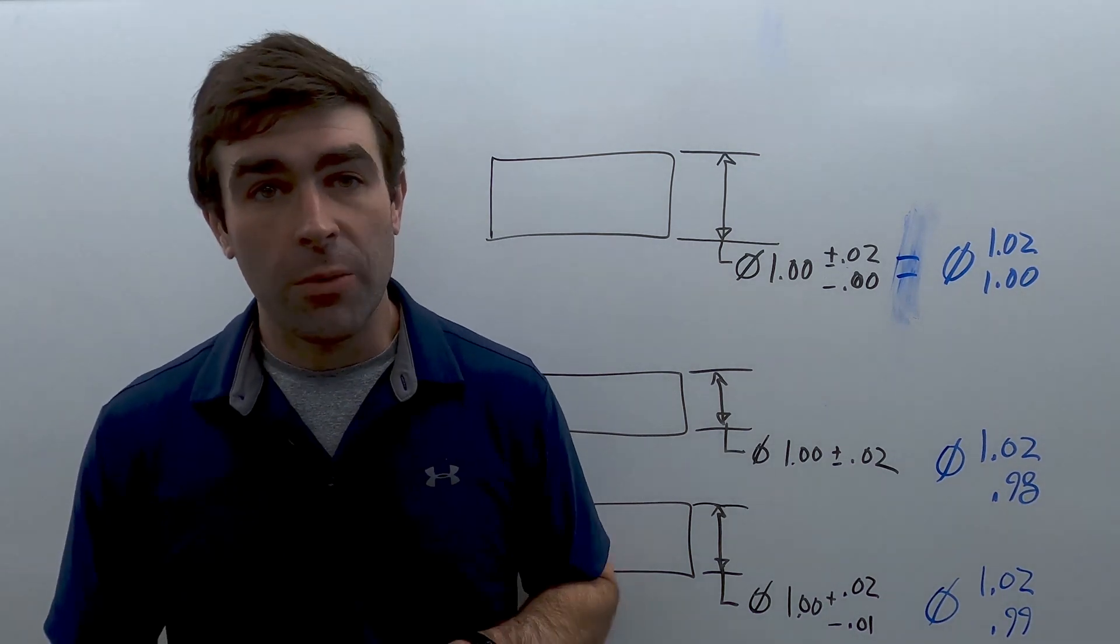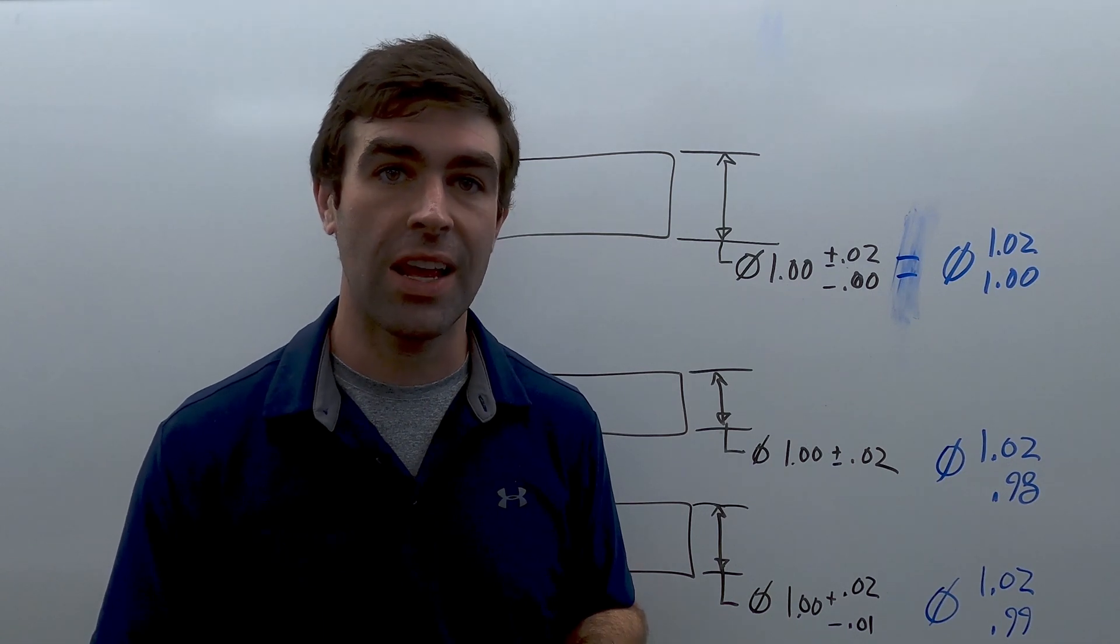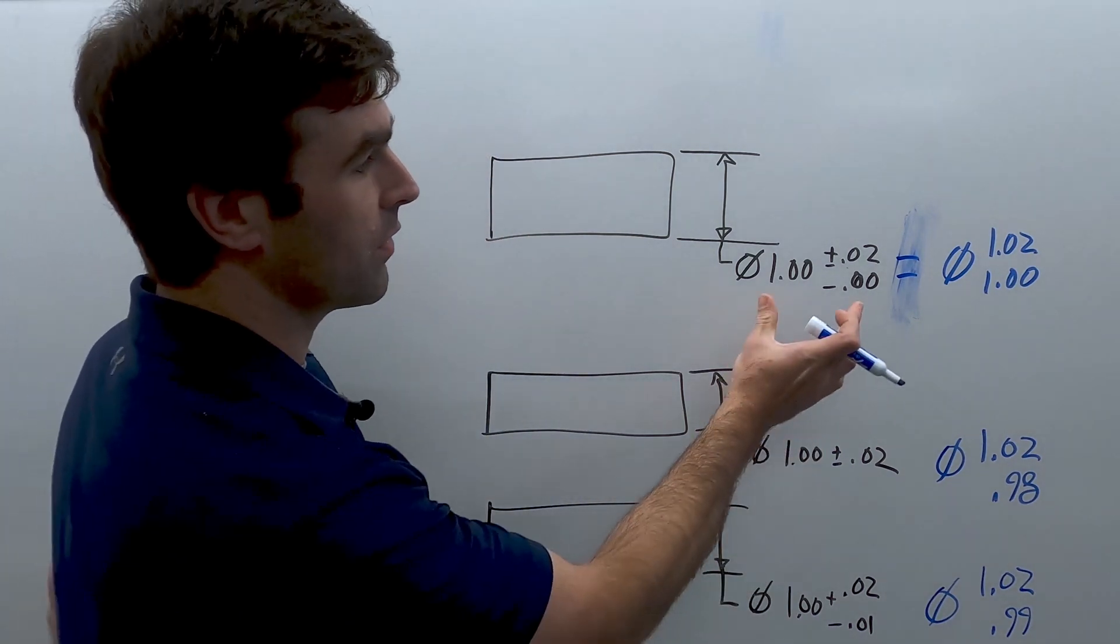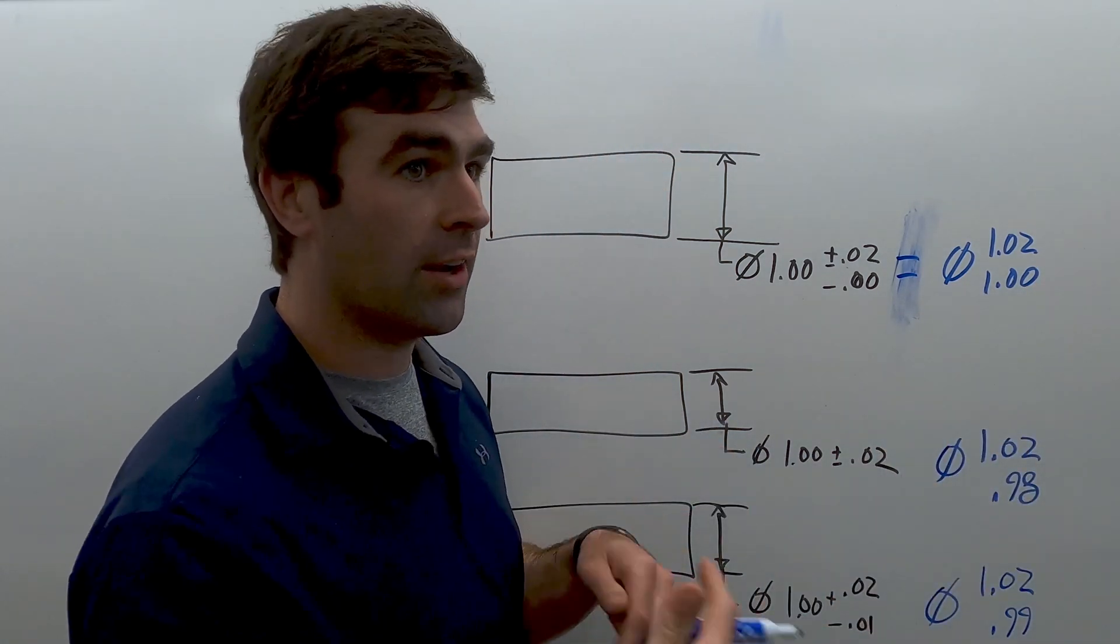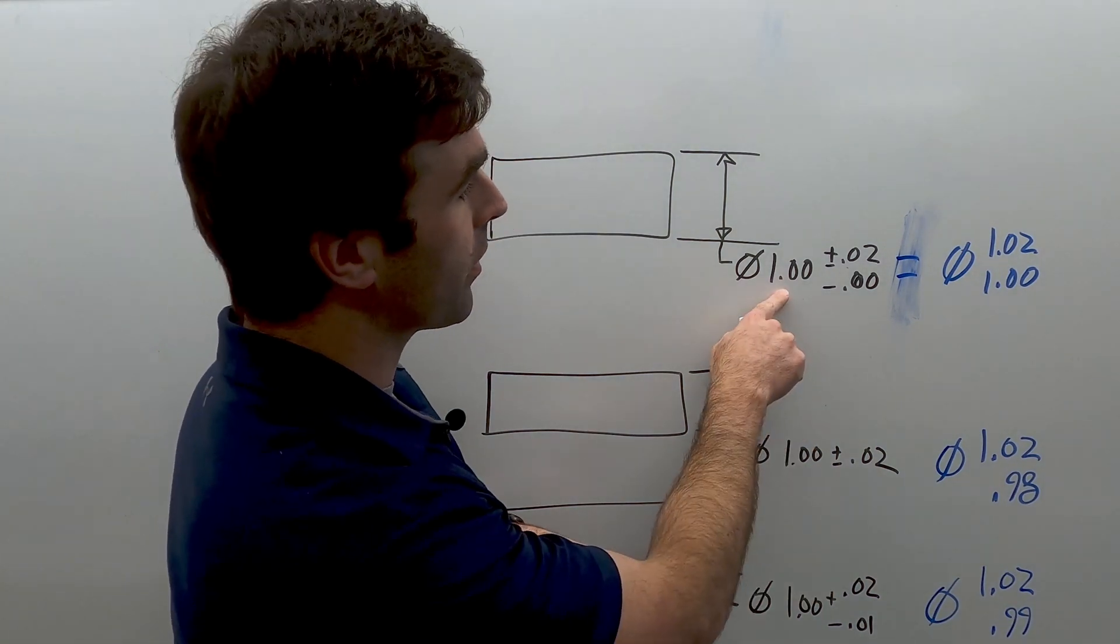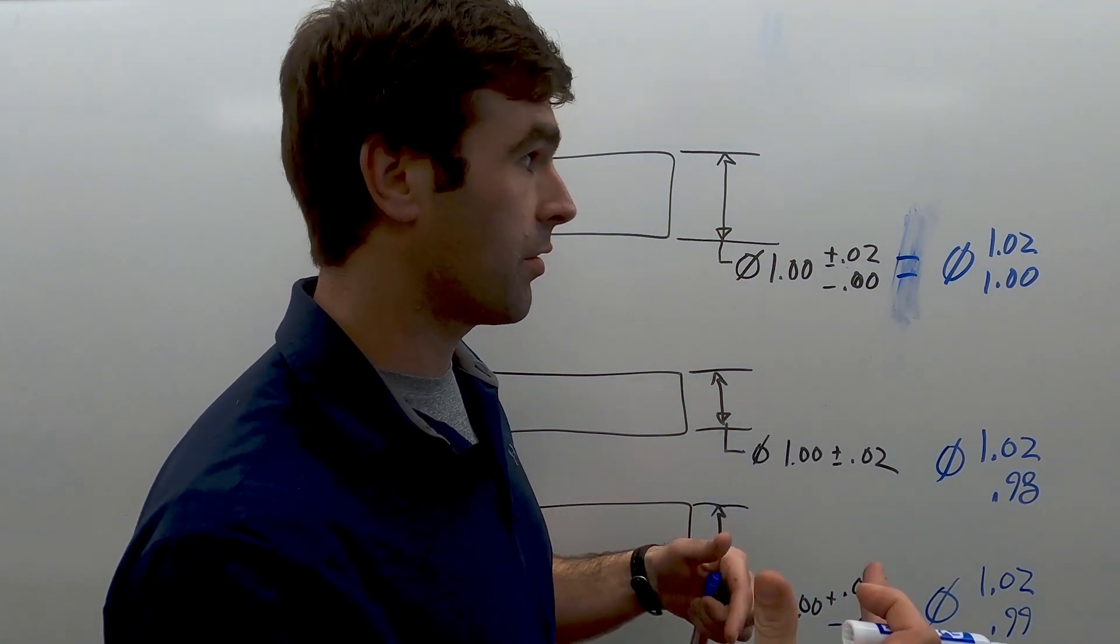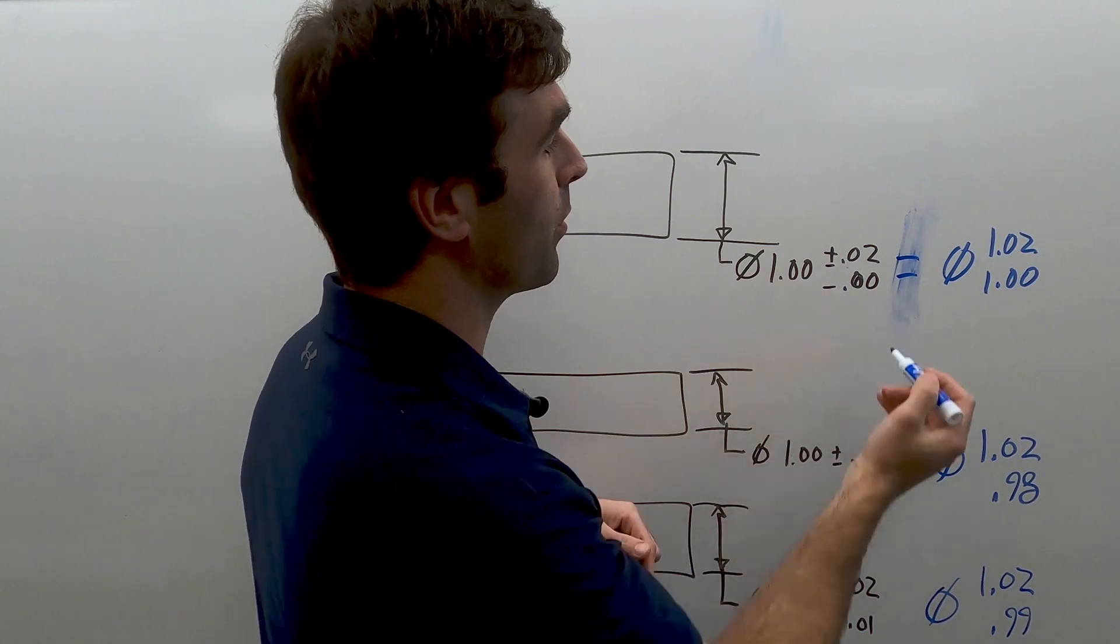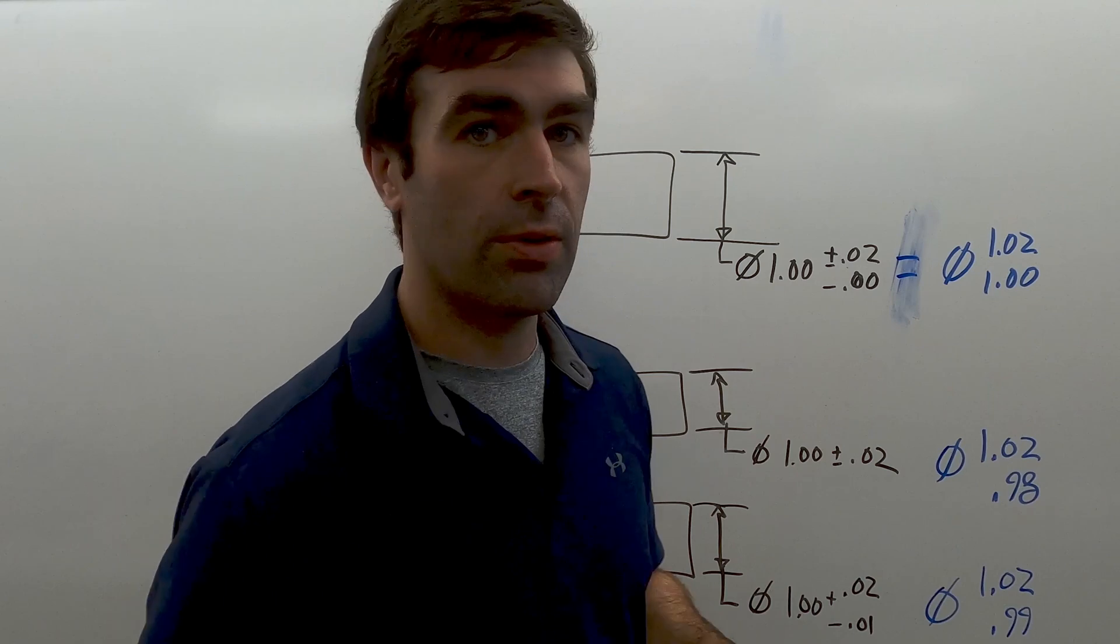So there's just a lot of different ways to write the same thing. They all, if the total tolerance is the same, it basically means the same thing. So if you see this on a drawing, see this on a drawing, means the exact same thing. It shouldn't change the manufacturing or the inspection process. So if this part comes in at 0.99, it's still wrong. It doesn't matter how close it is to the zero or not. Anything outside of this range is wrong.